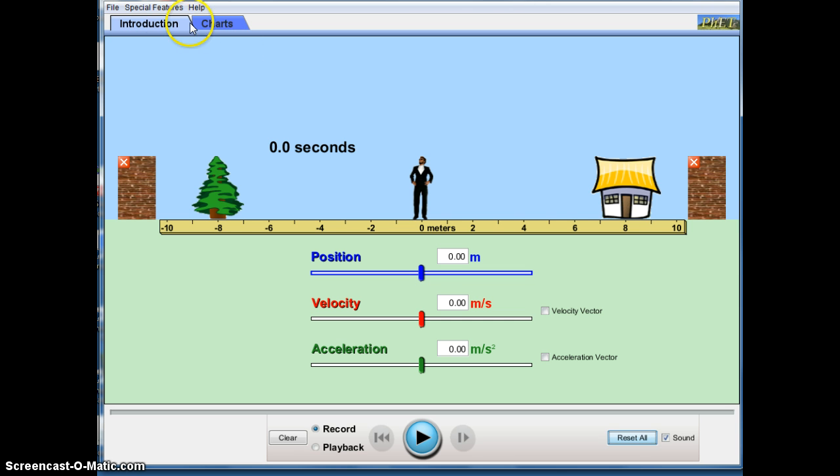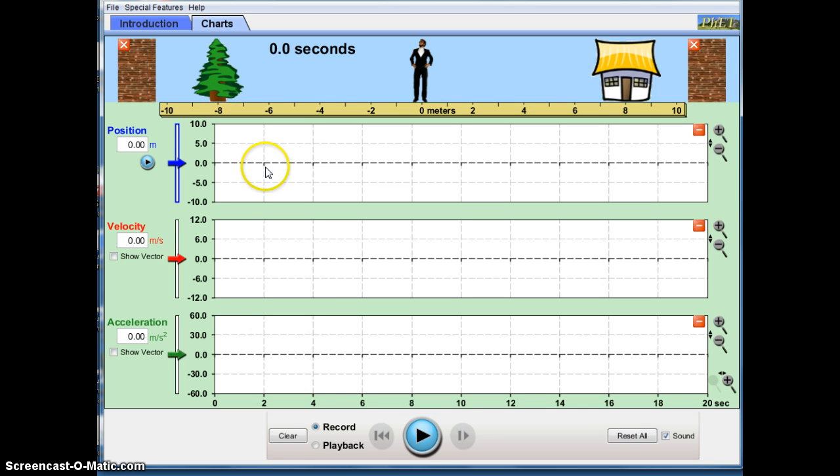Up at the top here you have two different tabs, Introduction, that is where you will need to start, and at the end of the lab you will check your understanding by hitting Charts. As you can see, you have three different graphs here that are going to record your data from the Moving Man simulation.